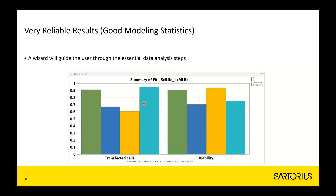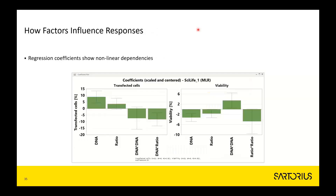Quality performance indicators of the data are presented as a quartet of bars for transfected cells and a quartet for viability, with very reliable results and good modeling statistics, meaning we can trust whatever maps or graphs we are looking at. The coefficients show some non-linear dependencies: the factors combine non-linearly to influence both transfected cells and viability.